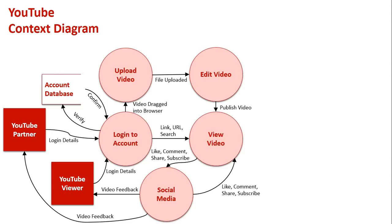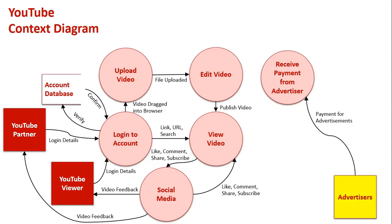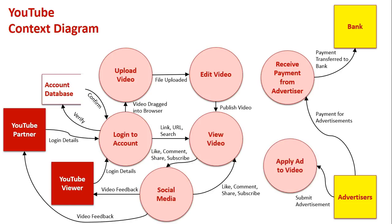This is primarily available to both types of users. Now we bring up the monetized portion of YouTube. Here is the advertiser again - their first step is they need to pay YouTube for advertisement, and that goes straight to the bank account. The bank gets paid for the advertisement from the advertisers. Once that payment is made, they have to apply the ads to videos, so they need to submit advertisements to YouTube.